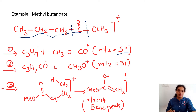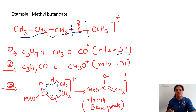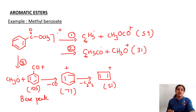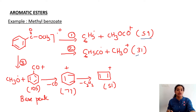The third fragmentation is the McLafferty peak, where bond shift takes place to give ethylene as a byproduct. The base peak is the McLafferty peak at m/z = 74. For aromatic esters, methyl benzoate is the most common and simplest example. The first two fragmentation patterns give peaks at m/z = 59 and m/z = 31, similar to aliphatic esters.